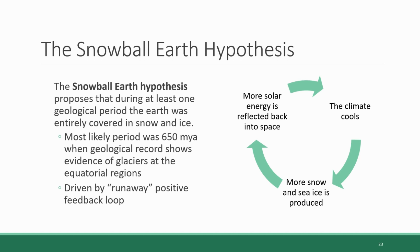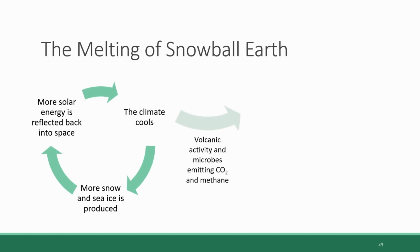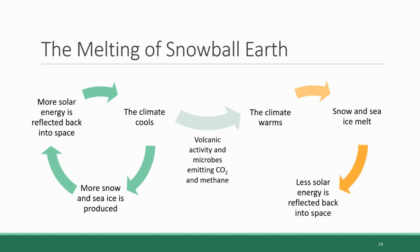The leading thought on how the planet broke out of this runaway feedback loop is that volcanic activity emitted large amounts of carbon dioxide and methane into the atmosphere, as did the metabolism of microscopic organisms — this period was before multicellular life had evolved. These higher levels of CO2 and methane caused the climate to warm, which caused snow and sea ice to start melting, lowering the Earth's albedo because there was more open ocean and less ice, causing further warming, which melted even more ice, and so on.